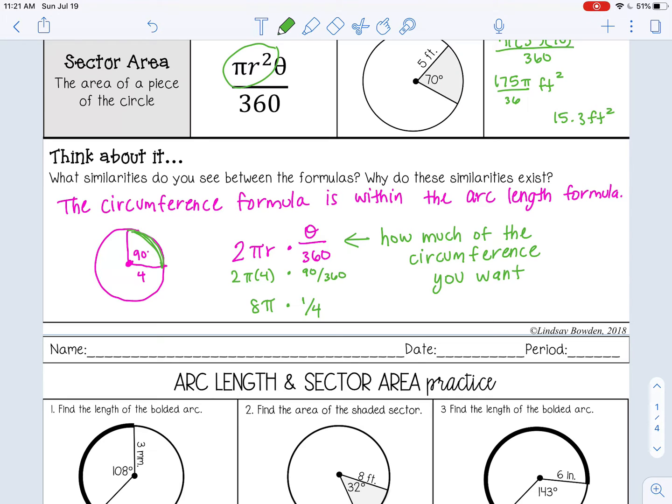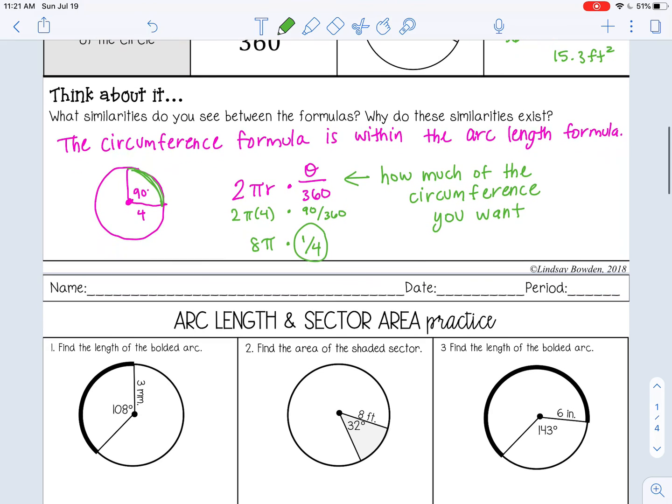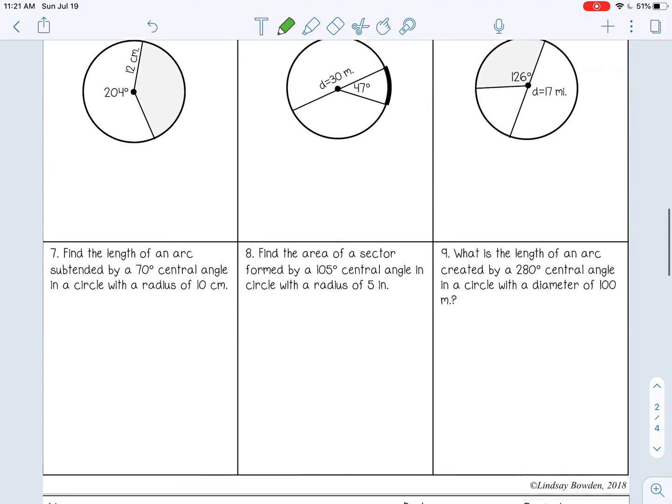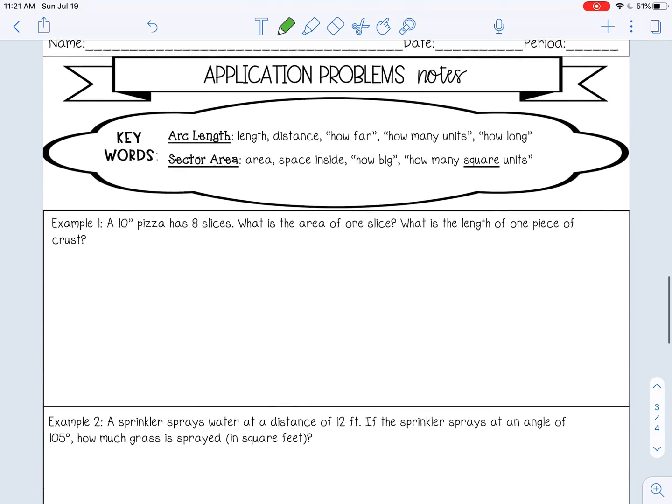If my θ was 90, I want one fourth of the circumference. Go ahead and pause the video now and complete arc length and sector area practice and check it with your teacher. And then we will move on to application problems. So you should have completed this. Let's move on to application problems.